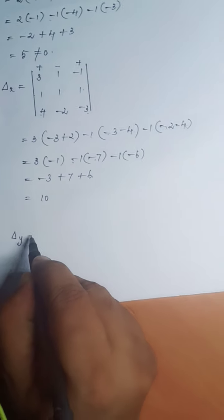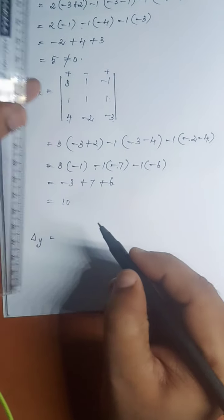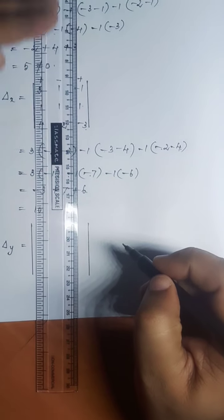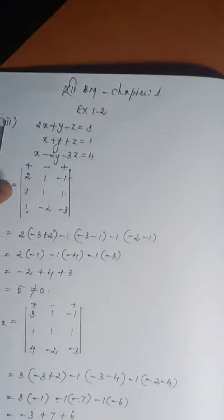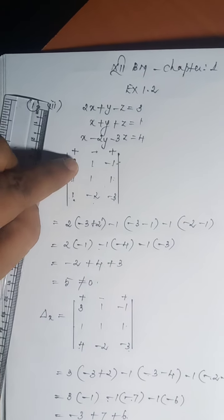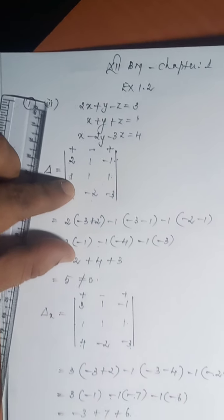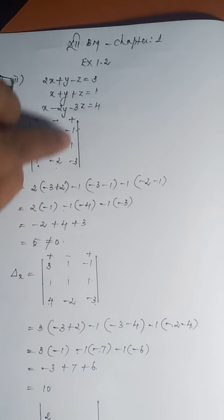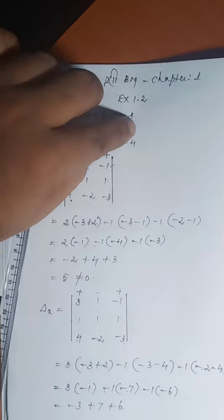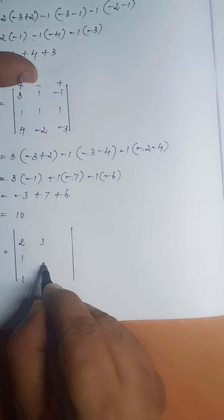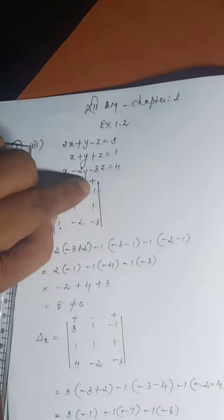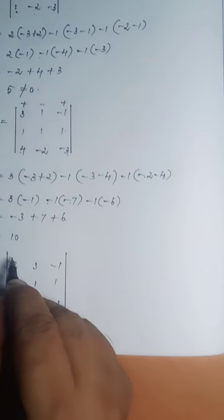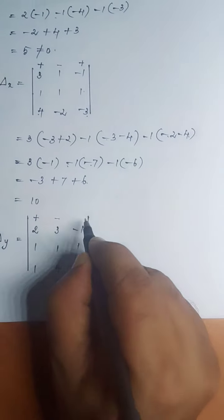Now I am going to calculate del y. That is also a 3 by 3 minor. The first column of delta remains as it is. The second column of delta should be replaced by the constants 3, 1, 4. The third column of delta remains as it is: minus 1, 1, minus 3. At the top: plus, minus, plus.